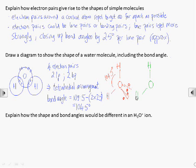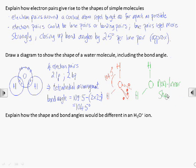Once we know the bond angles and how the electron pairs are arranged, we can draw the molecule or ion, keeping the same arrangement but without the lone pairs being drawn. This helps us to visualise the shape, so we can choose the correct name.